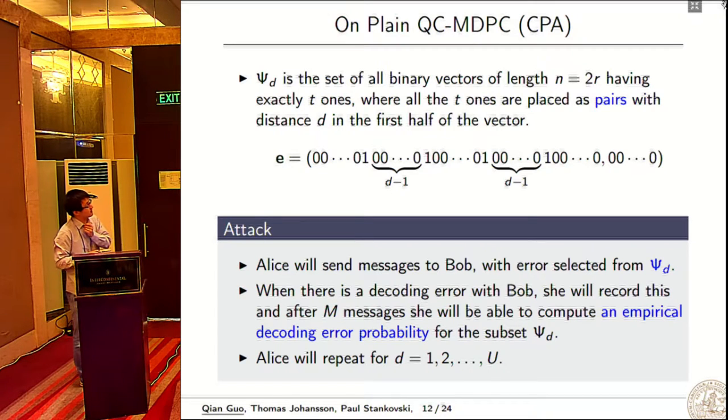This is the CPA case for plain QC-MDPC. In this case, the error is not protected, so we can choose errors from psi_d, which is the set of all binary vectors having exactly t ones, where all the t ones are placed as pairs with distance d in the first half. This is an example - we can see this is a pair of ones with distance d and this is another pair, but for the second part it's all zero.